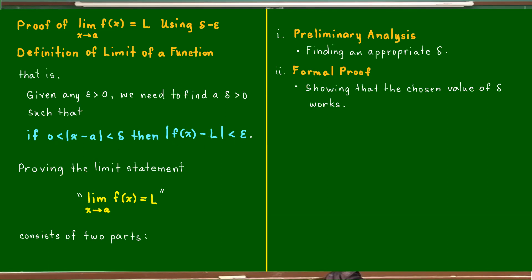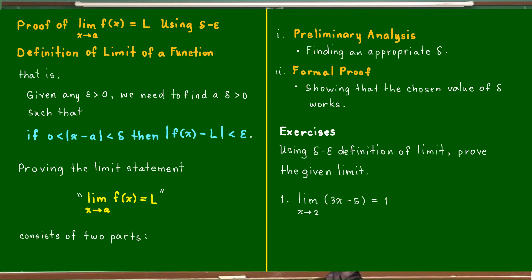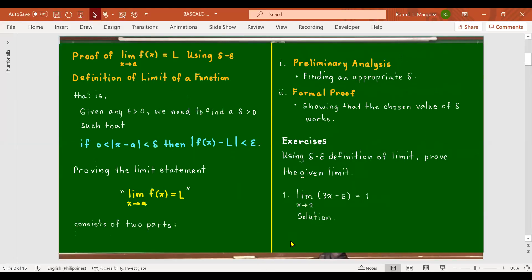So let us have the following examples. Using the delta-epsilon definition of limit, prove the given limit. Number one: limit of 3x minus 5 as x approaches 2 is equal to 1. Here, we identify a to be equal to 2 and l to be equal to 1. So given any positive epsilon, we need to find a positive delta such that...